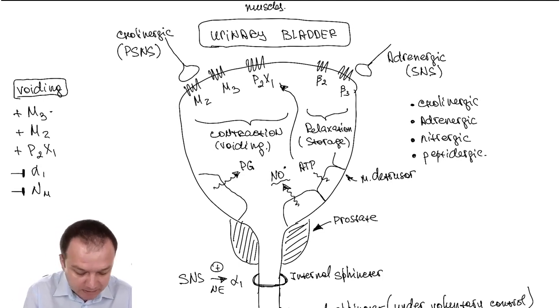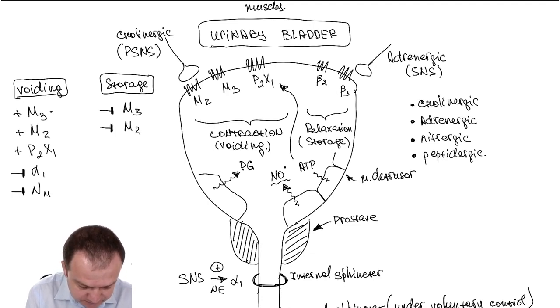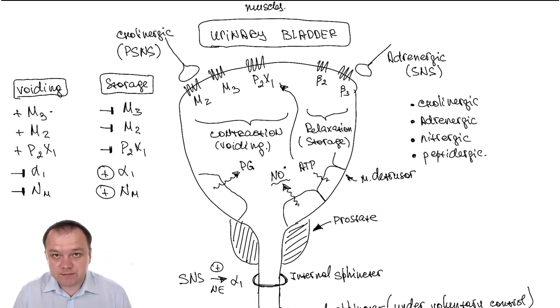What about storage, storage or accumulation of the urine? We have inhibition of M3 receptors, less impulsation on M2 receptors, less impulsation on P2X1 type of receptors, and stimulation of alpha-1 adrenergic receptors, and activation of NM receptors.